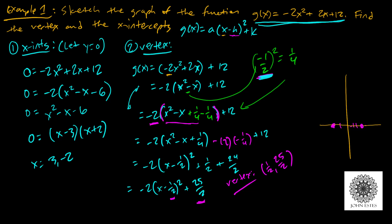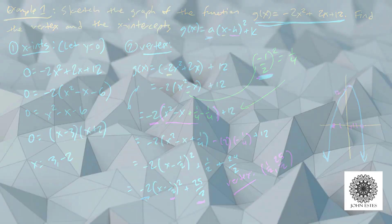The vertex is at (½, 25/2): x = ½ is just right of the origin, and 25/2 is a little bigger than 12, so the vertex sits high up. The graph bends downward from there, passing through x-intercepts at 3 and −2. This makes sense because a = −2, and a negative a value turns the parabola upside down.